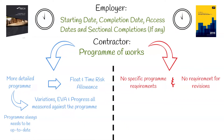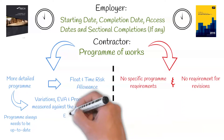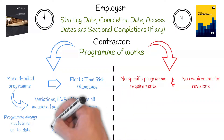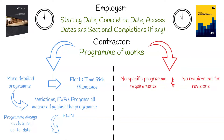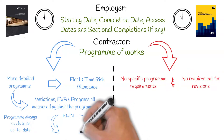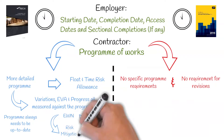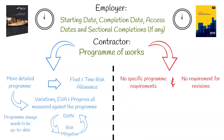A key feature of addressing risk to program extensions is early warnings. Under the NEC, these are submitted by either the project manager or contractor as soon as one or the other becomes aware of any matter which could affect the time, cost or quality of the works. These are usually followed by a risk mitigation meeting where parties will work collaboratively to mitigate risk, a task which would be extremely difficult without an up-to-date program.